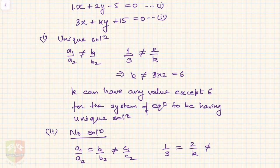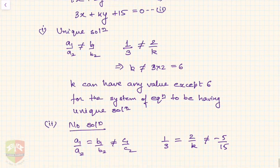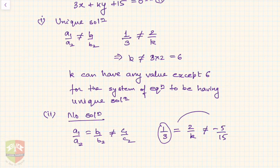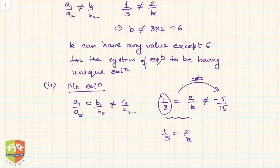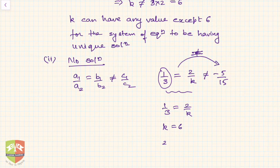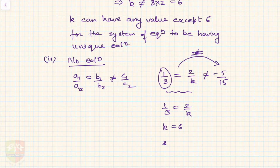The condition also requires it should not equal minus 5 by 15. Since 1 by 3 is already not equal to minus 5 by 15, that part is satisfied. From 1 by 3 equals 2 by k, cross-multiplying gives k equals 6. So if k equals 6, this system of equations will have no solution. The answer is k equals 6.